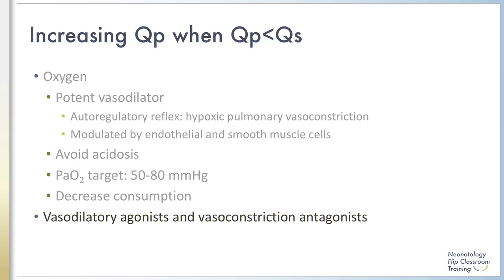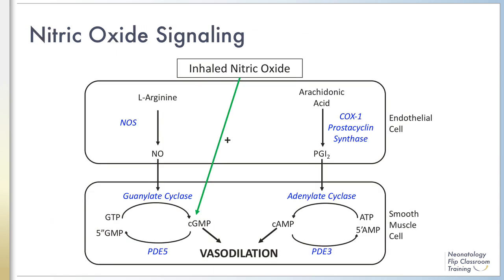In Module 1, we reviewed the vasoactive substances that drive pulmonary vascular constriction and relaxation. As noted there, endogenous nitric oxide released by endothelial cells leads to vasodilation in smooth muscle cells through activation of cyclic GMP by guanylate cyclase. Exogenous nitric oxide has the same effect. Inhaled nitric oxide acts as a potent and selective pulmonary vasodilator without causing a significant decrease in systemic vascular resistance. iNO is preferentially distributed to ventilated units of the lung, increasing perfusion of those units and improving VQ matching. The NO reaches the alveoli and diffuses into neighboring endothelial and smooth muscle cells, leading to vasodilation by increasing levels of cyclic GMP.